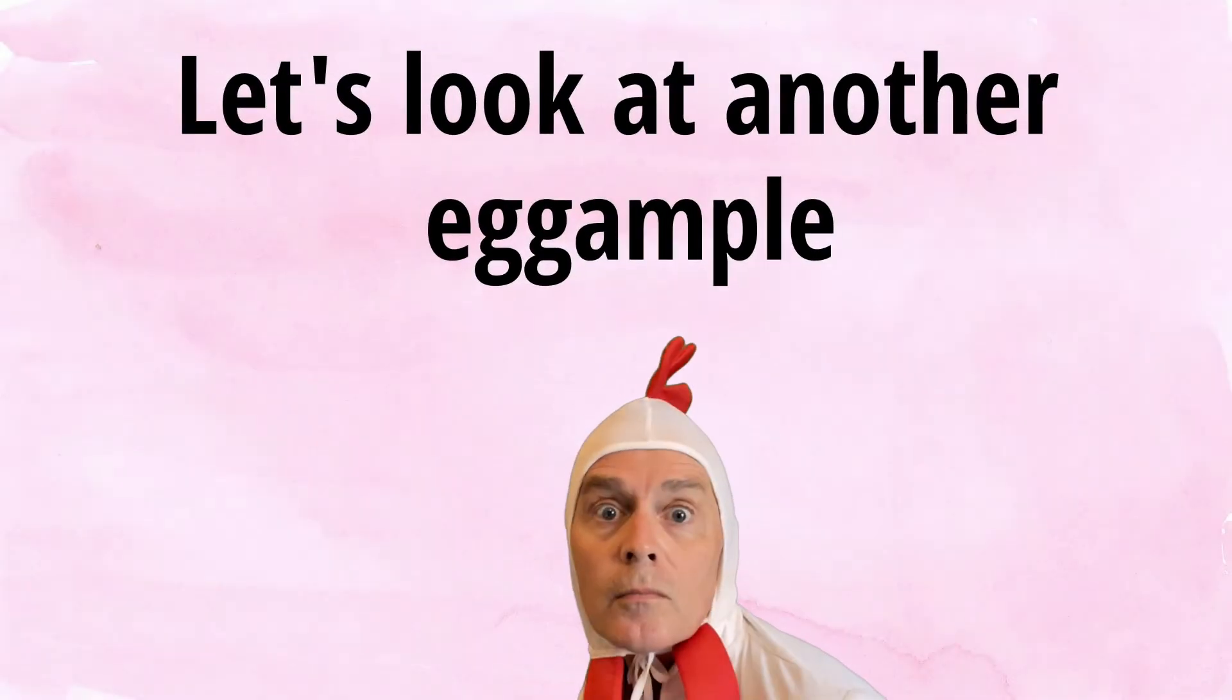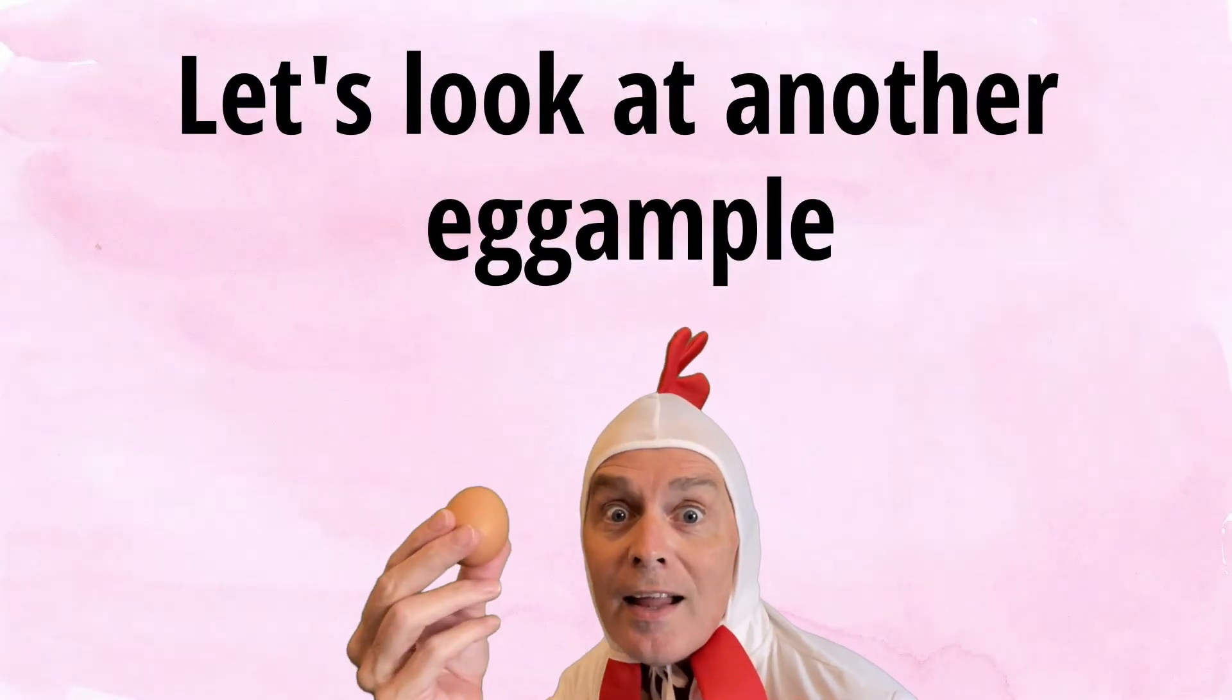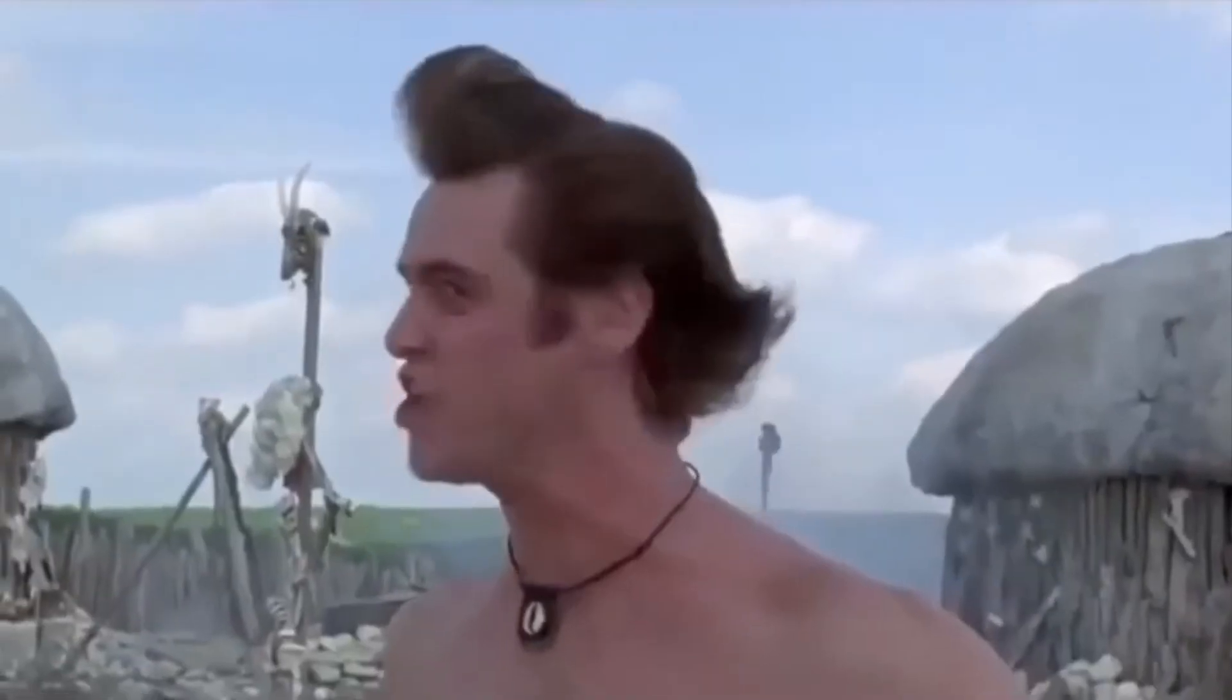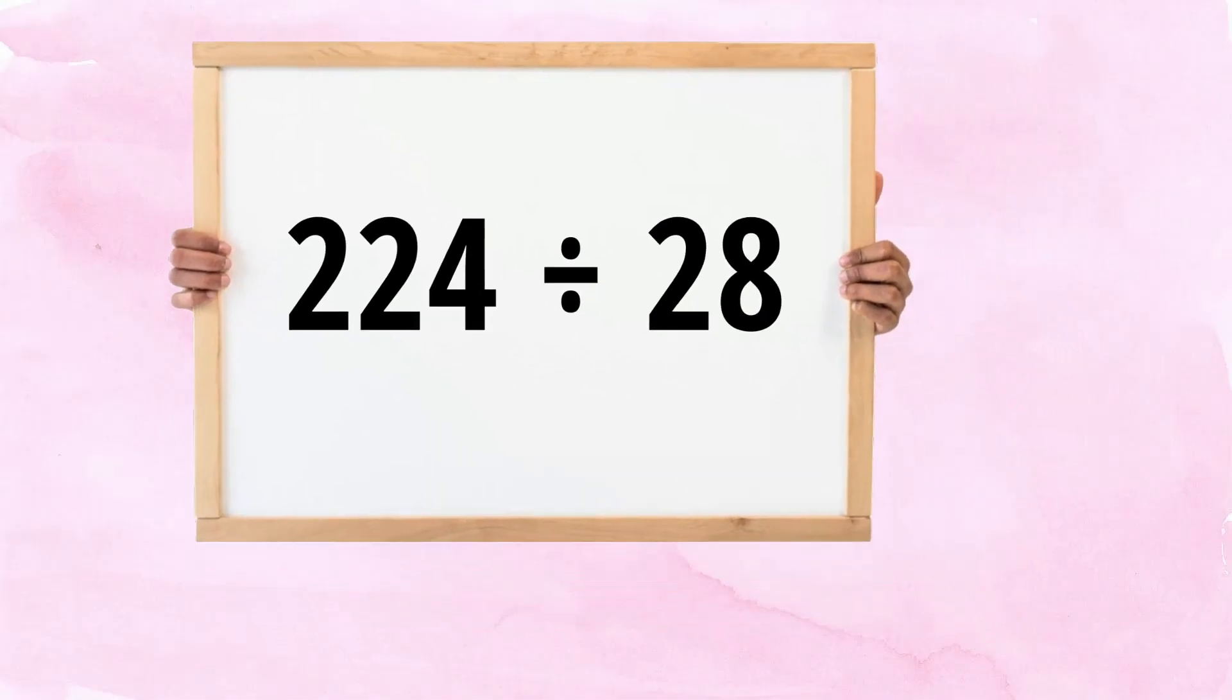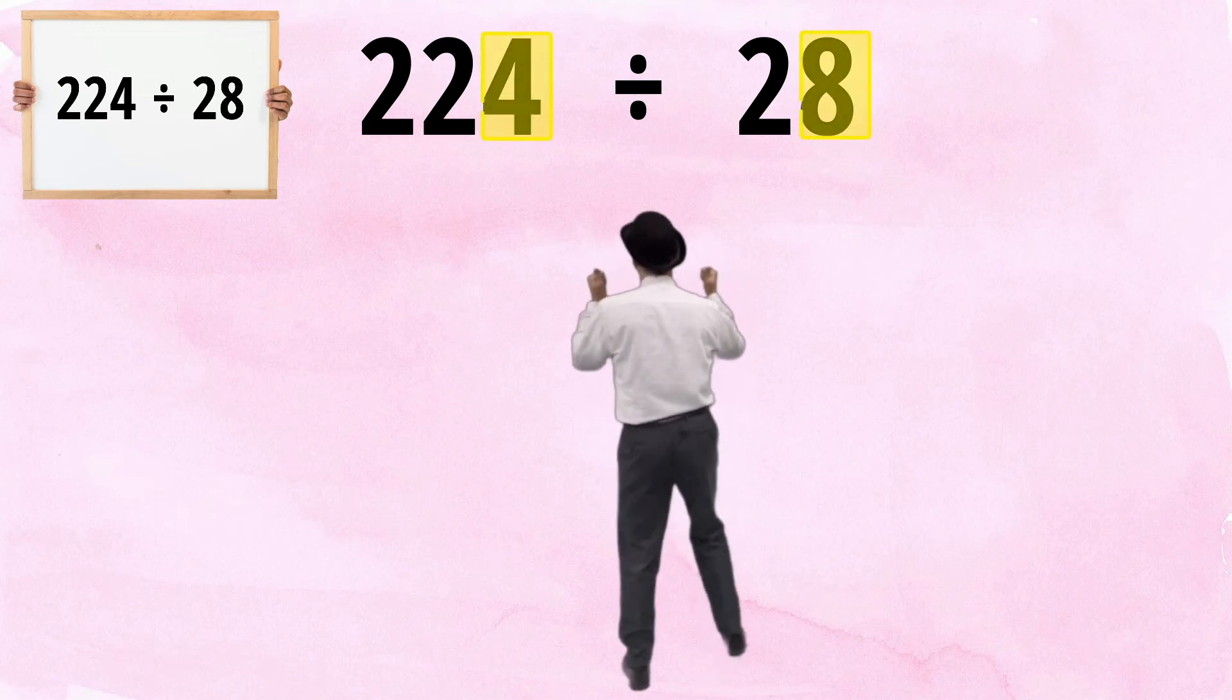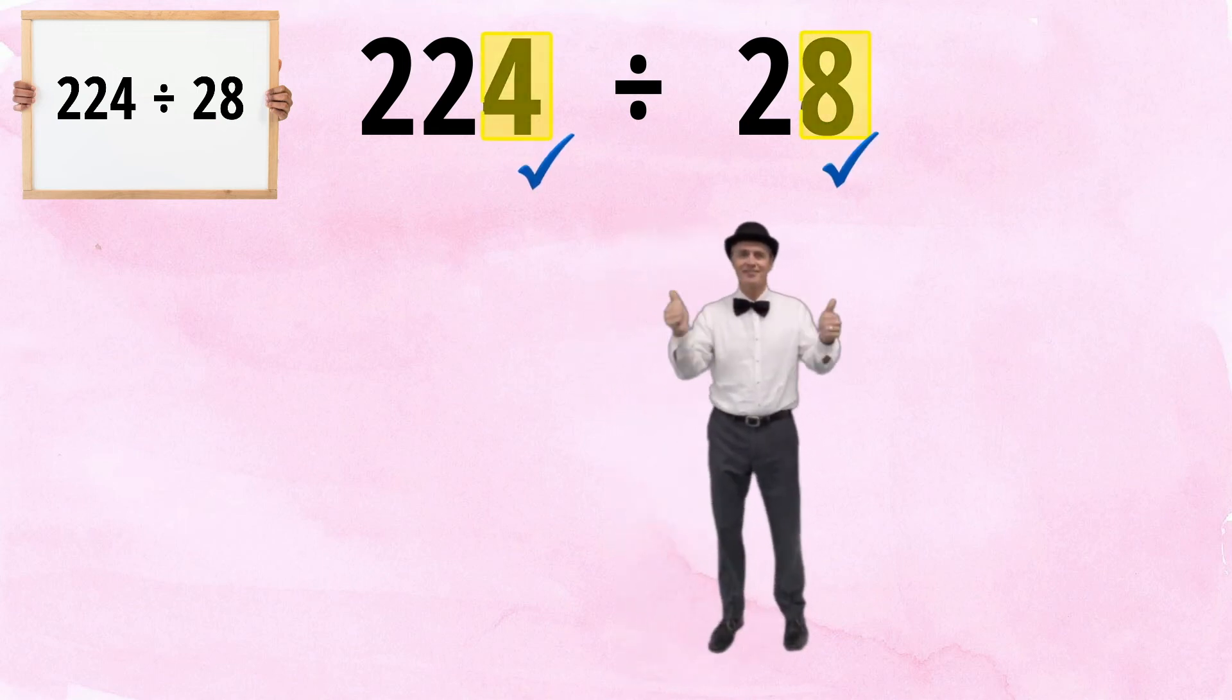Let's look at another example. 224 divided by 28. I believe in you. Alrighty then! Whilst on first viewing this looks tricky, you will notice that both numbers are even numbers, so we can use half-eiding to make the question easier for us.